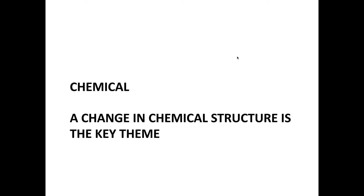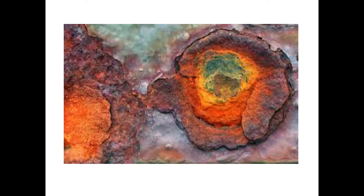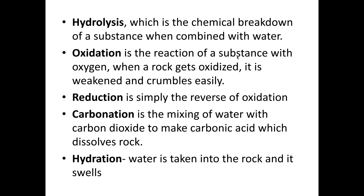For chemical weathering, the focus is that there is a change in chemical structure which makes the rock weaker. There are five to choose from. Carbonation is a good choice because it links to the carbon cycle — we're familiar with carbonic acid from the carbon cycle. Oxidation you'll be vaguely familiar with: when metals oxidise, if they have iron in them, they will rust — and it can happen in rocks too. Choose two of those for chemical.